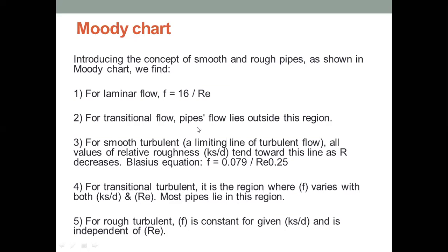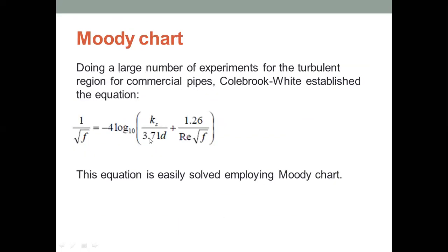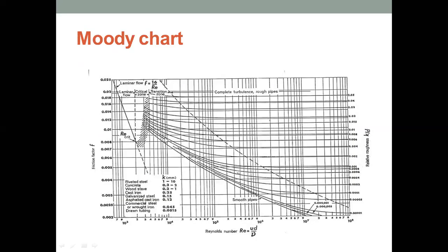For different types of flow, we can calculate the friction factor from these equations, which are mentioned in 1, 2, 3, 4, and 5 points here. Colebrook-White established the equation to find the friction factor by a large number of experiments. From this equation, we can easily employ the Moody chart.